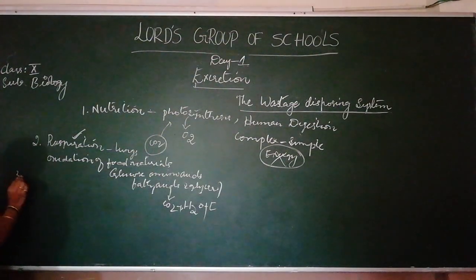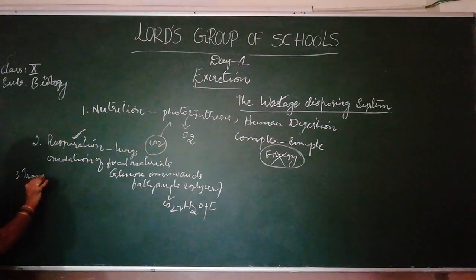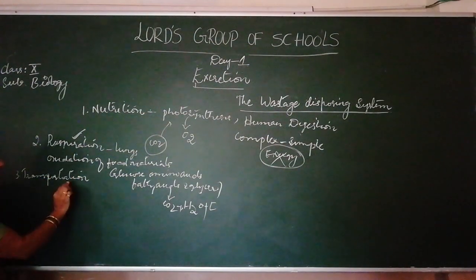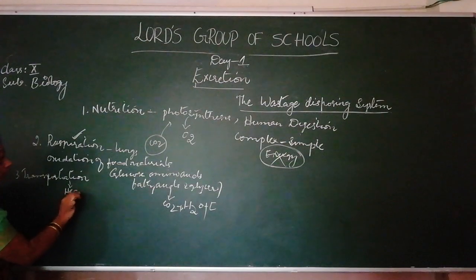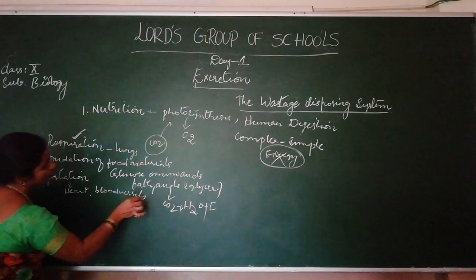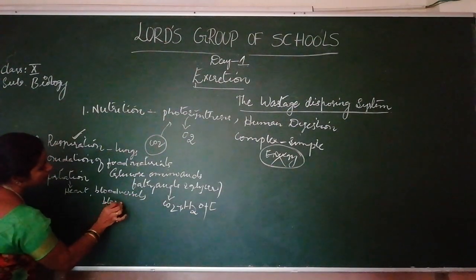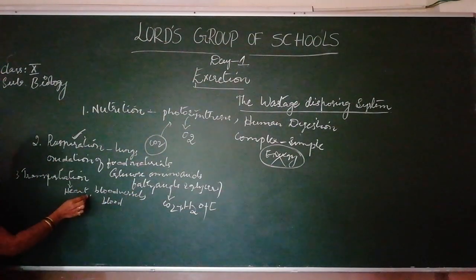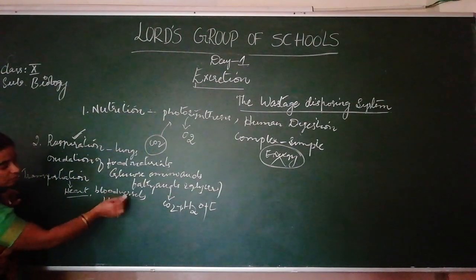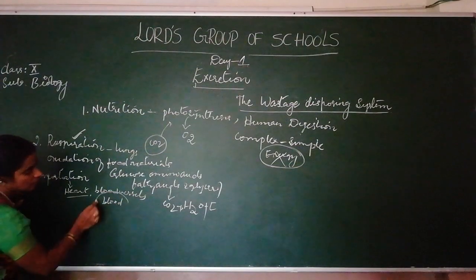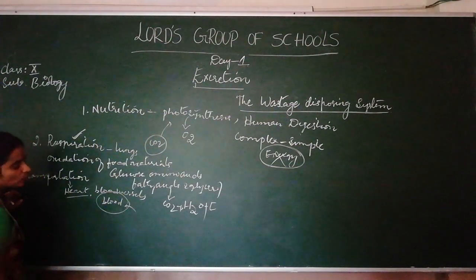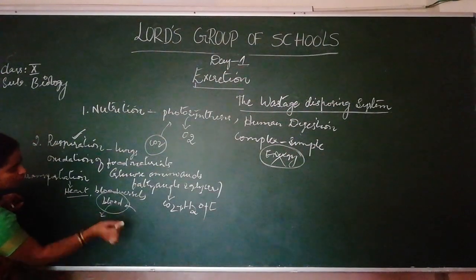In the third lesson, we learned about translocation — that is the circulatory system. The circulatory system consists of the heart, blood vessels, and blood. We learned about the structure of the heart, the working of the heart, arteries, veins, the differences between them, and also about blood and coagulation of blood.